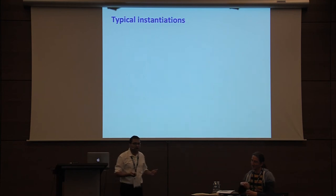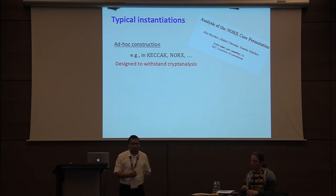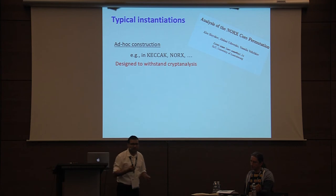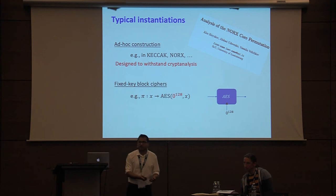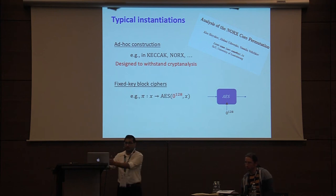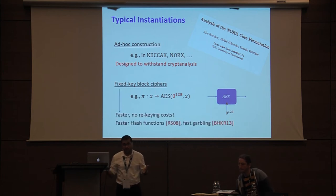These permutations arise in practice in one of two forms. One is via ad hoc constructions which are designed to withstand cryptanalysis — this is the approach taken in constructions like Keccak and Norex. Another is to use an existing block cipher like AES and fix its key to zero. This approach has been used to construct faster hash functions and even fast garbling schemes.